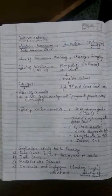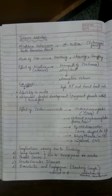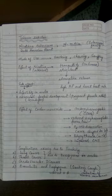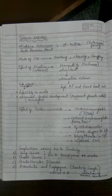We understood the topic of tobacco addiction in the last class. Tobacco is obtained from the Nicotiana tabacum plant, also called Nicotiana rustica, which belongs to the Solanaceae family and has a South American origin.